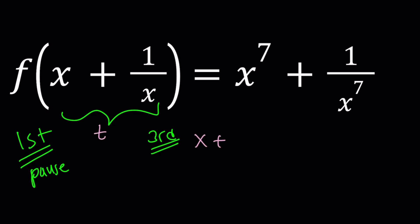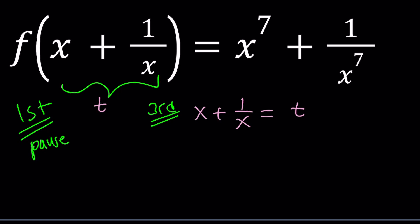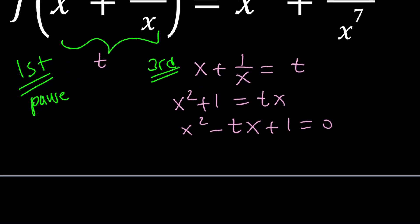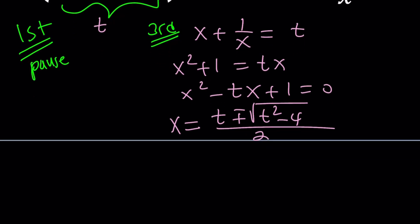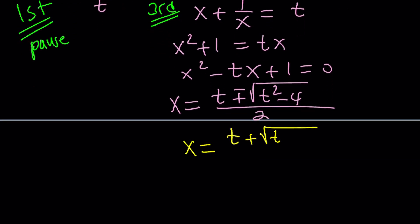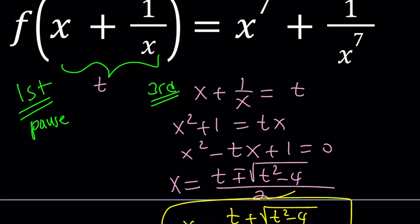If you go ahead and call this t, x plus 1 over x equals t, then you can solve this equation. It's going to be quadratic. x squared plus 1 equals tx, then x squared minus tx plus 1 equals 0. So we can solve for x using the quadratic formula: x equals negative b plus minus the square root of b squared minus 4ac all over 2a. What you can do next is replace x with this, here and here. Simplify the right-hand side.